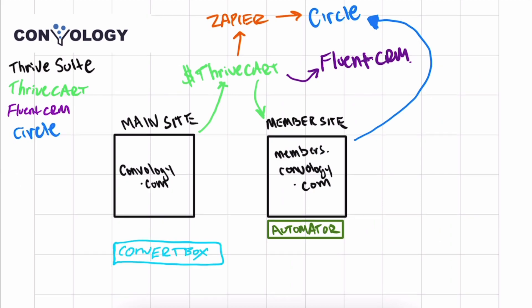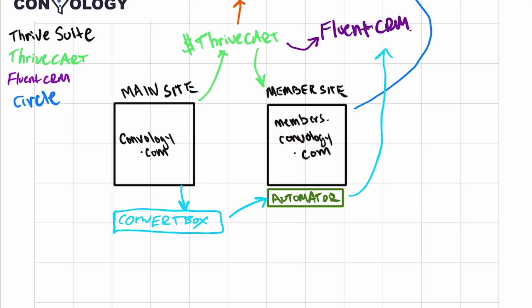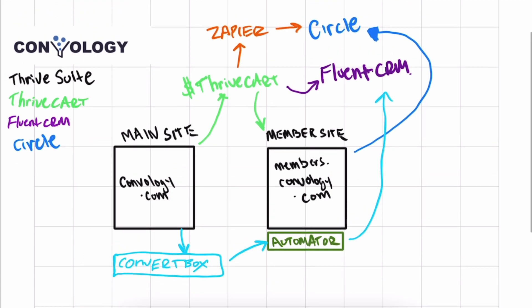It integrates with the next piece of our tech stack. That tool is called ConvertBox. ConvertBox is my lead segmentation tool that I use. Think of it like an alternative to Thrive Leads. It just does a lot more robust segmenting. What I love about it is that my main site connects down to ConvertBox, and ConvertBox talks to my membership site via Thrive Automator and webhooks. Automator from there can talk to FluentCRM. Automator has become kind of the central brain and central hub of all of the tech stack on my membership site.